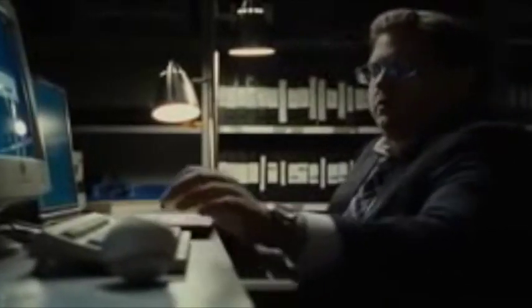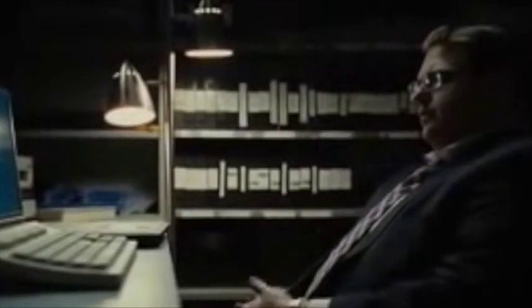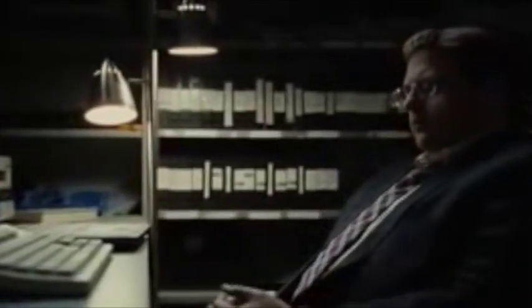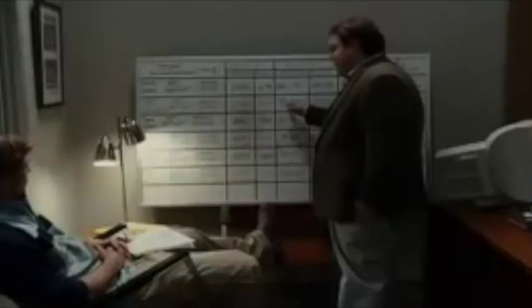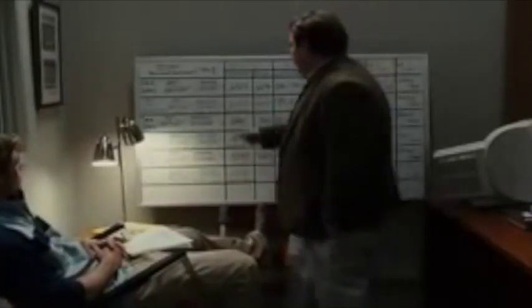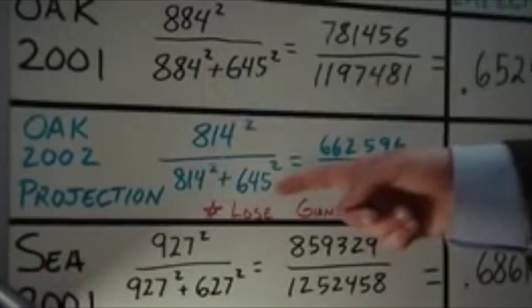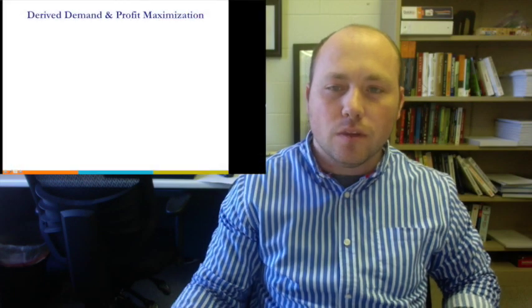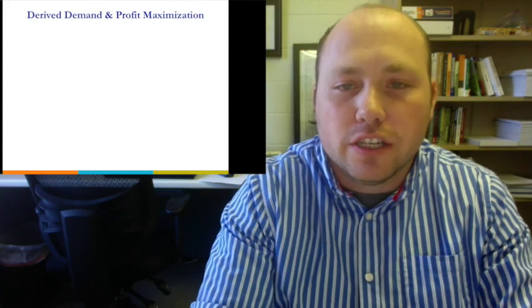[Moneyball clip 2] 'Using this equation, I'm projecting that we need to win at least 99 games in order to make it to the postseason. We need to score at least 814 runs in order to win those games, and allow no more than 645 runs.'